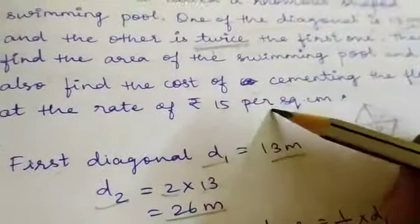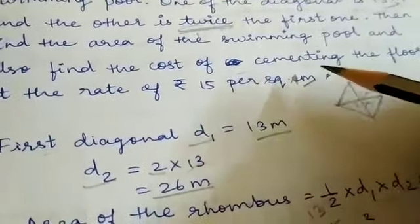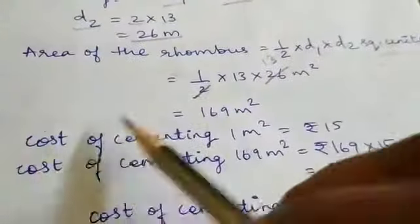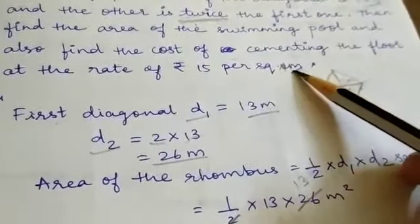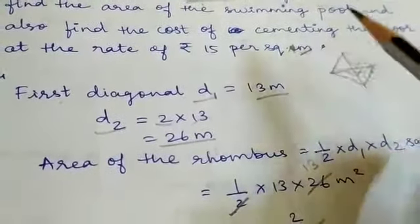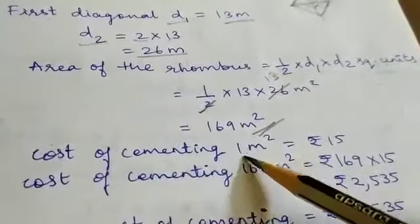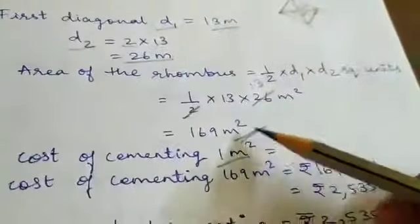Sorry students, this is meter square not square meter. This is a mistake in the textbook. Please change it. Cost of cementing 1 meter square is given.